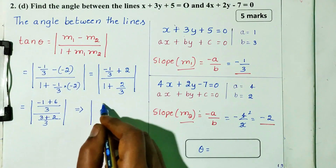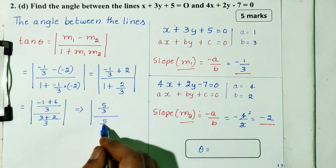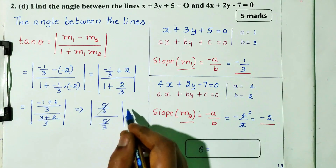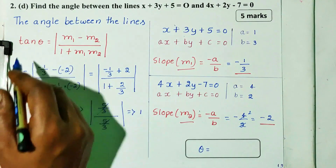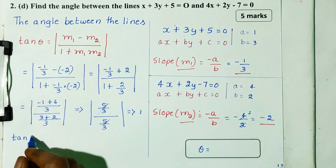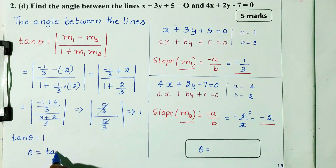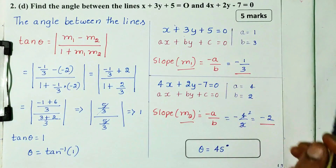Simplifying: 6 minus 1 equals 5 divided by 3, and 3 plus 2 equals 5 divided by 3, which cancels to give 1. So tan theta equals 1, and tan inverse of 1 gives theta equal to 45 degrees. This equation is equal to 5 marks.